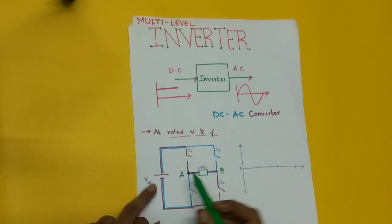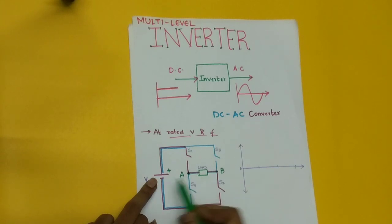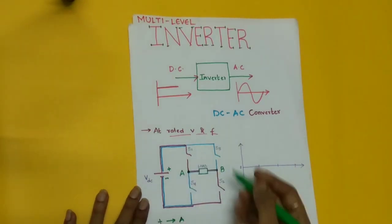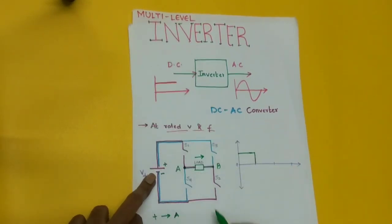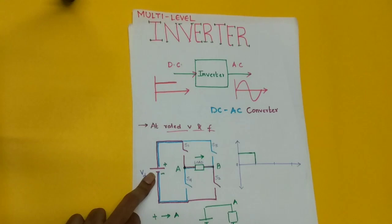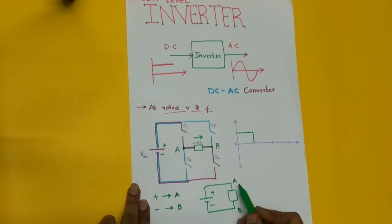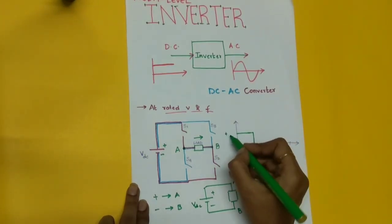Consider point A and point B in the circuit. The positive terminal of the source is connected to point A of the load and the negative terminal is connected to point B. That is, positive to A and negative to B — so VDC positive is being obtained at the output. This gives plus VDC at the output waveform.